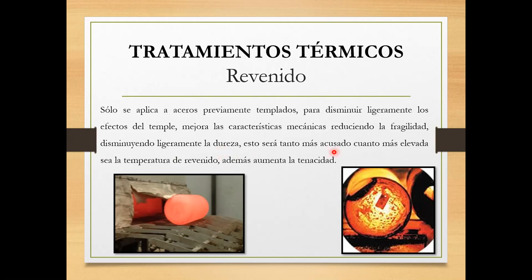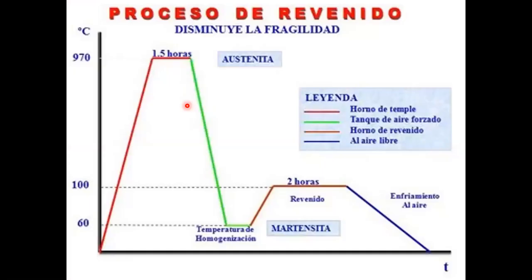Esto será tanto más acusado cuanto más elevada sea la temperatura del revenido; además, aumenta la tenacidad. En el gráfico del proceso de revenido se muestra cómo: la primera etapa consiste en calentar hasta los 970 grados Celsius, mantener esa temperatura por más de una hora y media, y posteriormente bajar la temperatura de forma abrupta y rápida, lo que genera el temple.